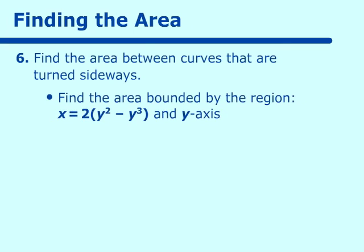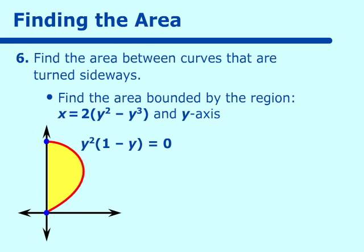Find the area bounded by the region x is equal to 2 times y squared minus y cubed and the y axis. If we sketch this one out, it looks like this. So this time our Riemann sum is taken from the y axis and everything is done in y's. It's not a big deal. We just have to find the beginning point on our y and the ending point on our y. And we find that x is equal to 0 when y squared times 1 minus y equals 0. We don't have to worry about the 2, and that's when y is equal to 0 or 1.